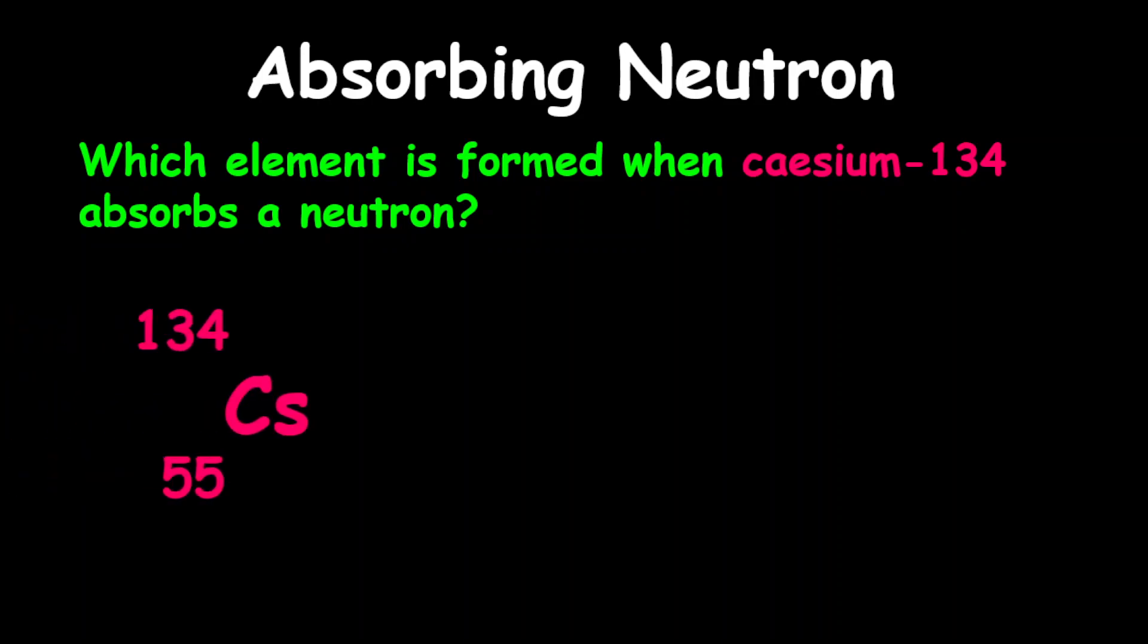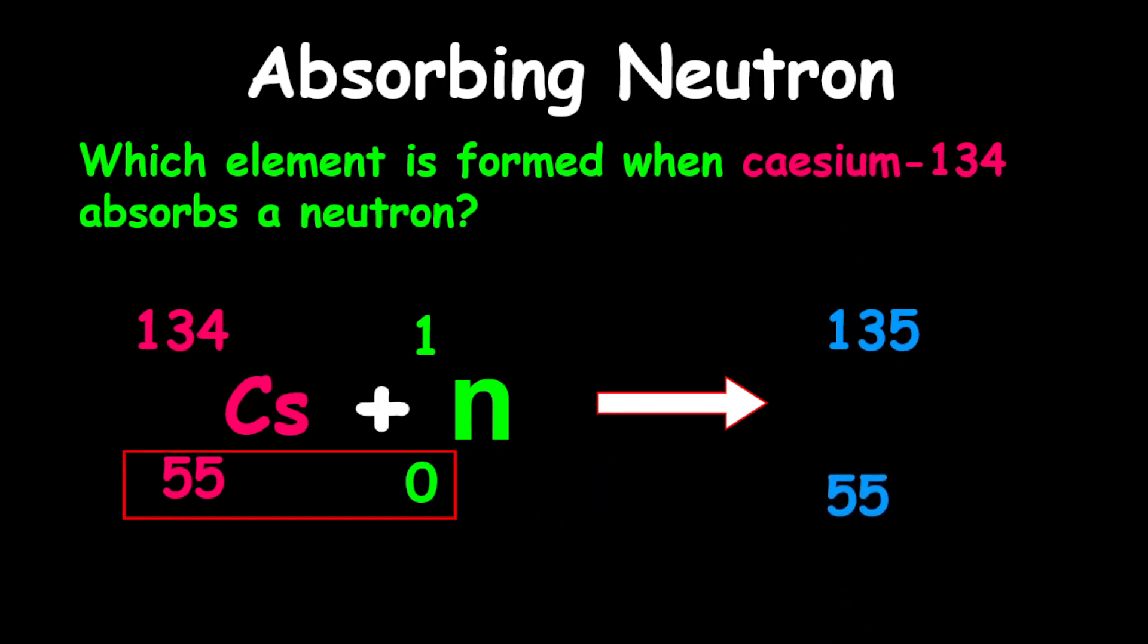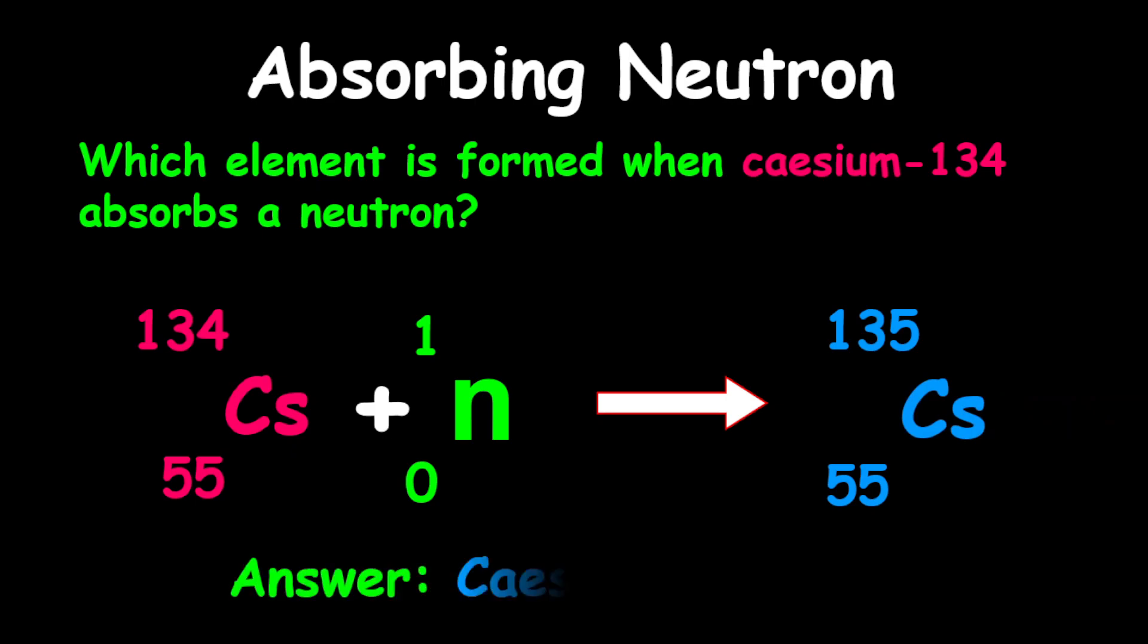Now, cesium has a proton number of 55. Absorbing a neutron, what we're going to do now to get the resulting element is to add the mass numbers, and so therefore we get 135. 0 to 55 is still 55, so therefore the new element is cesium. However, it is cesium-135.